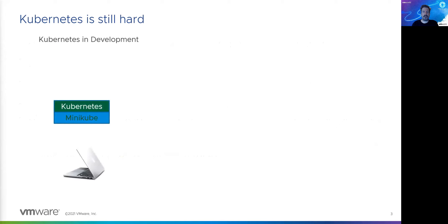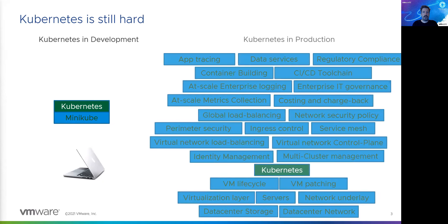For most developers, Kubernetes kind of still looks intimidating. But in the real world, especially in the on-premises enterprise environment, you need quite a bit more to actually productize Kubernetes and the application architectures you want to run on it. Companies like VMware and the public cloud providers have been developing services around Kubernetes to answer all of these different challenges.